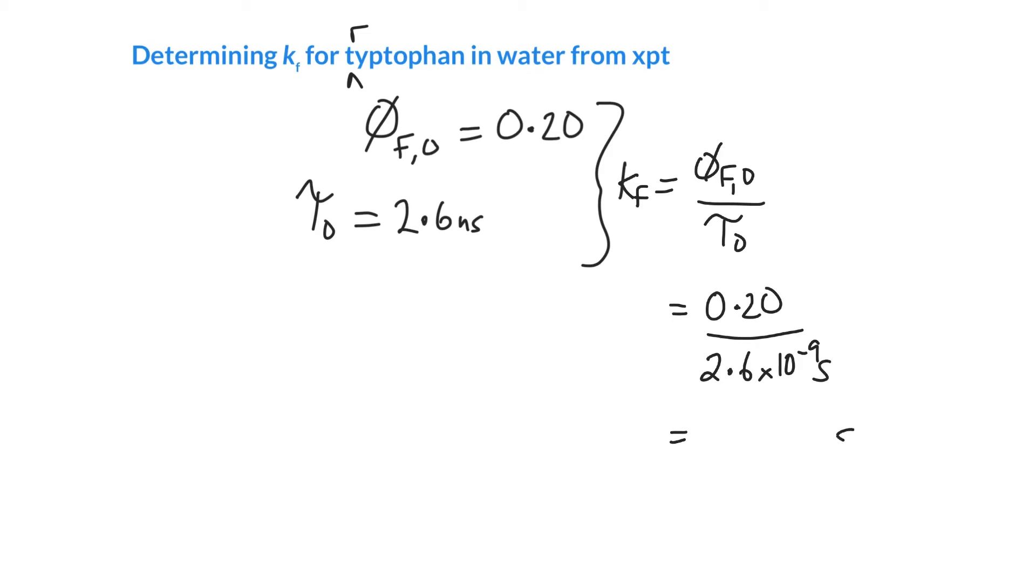And that's going to give us something with reciprocal seconds for its units. That's the units we'd expect for a first order rate constant. And to a couple of significant figures, we get that 7.7 times 10 to the 7. So fluorescence is a pretty fast process. Within a few nanoseconds, the majority of the excited state is decayed away.